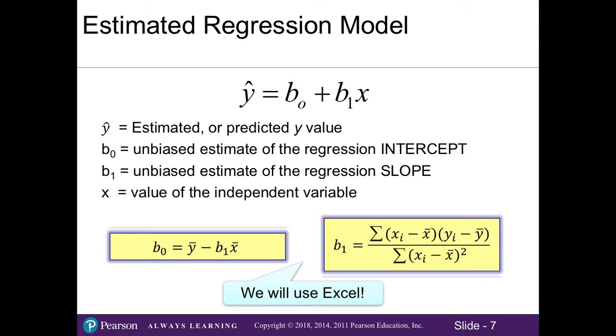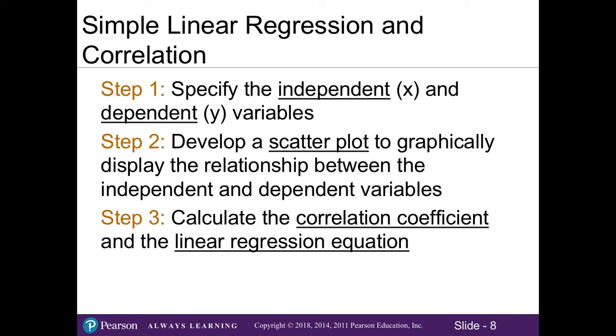Our goal when finding the best fitting line is to find the line with the smallest sum of squared residuals possible from our sample data. To do simple linear regression and correlation analysis, we first specify our independent or x variable and our dependent or y variable. Be careful to identify the x and y variables correctly. The independent variable is what we think might explain our dependent variable, and our dependent variable is what we're interested in understanding or predicting. In step 2, we develop a scatter plot, and in step 3, we calculate the correlation coefficient and the linear regression equation.